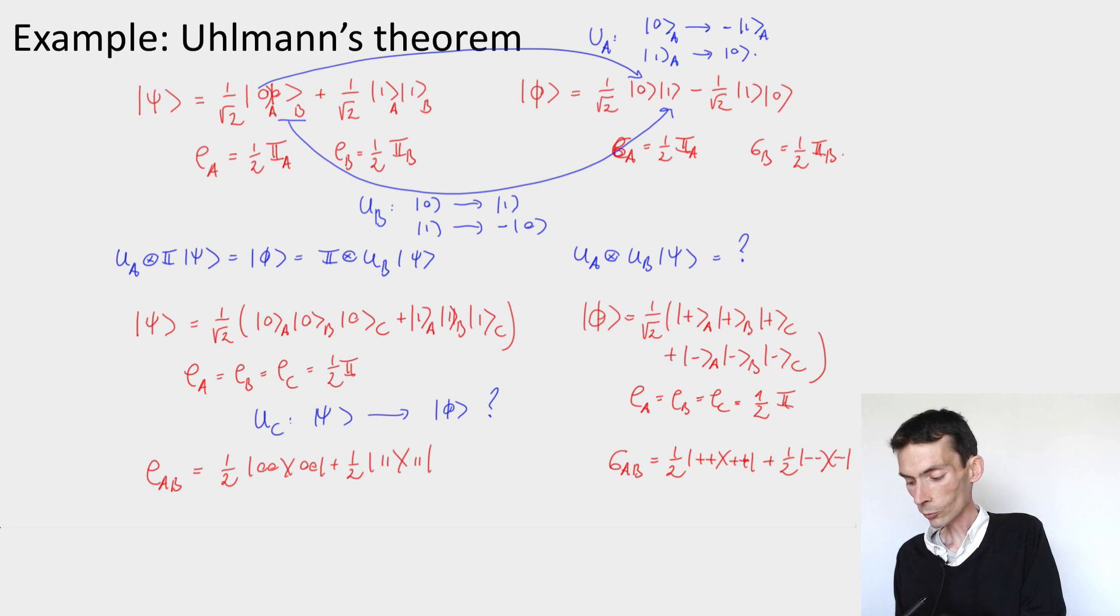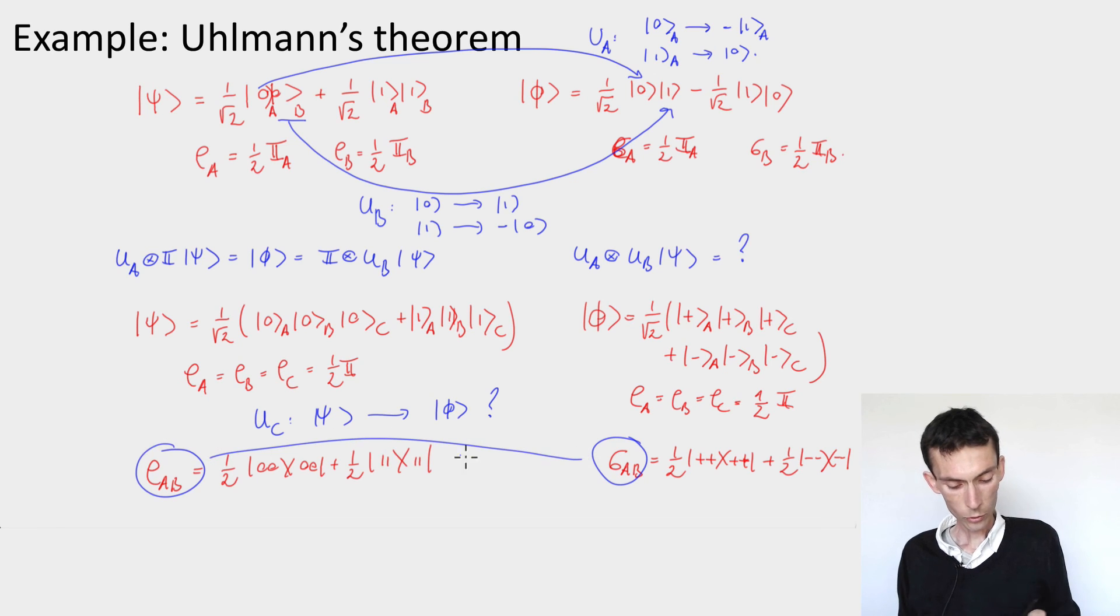And now these two reduced densities are not the same. For instance, you can check the overlap of the one and the other on 0 0 and 1 1, and you'll see that you don't get the same result. So these two are different, which means that the answer to the question here is no.